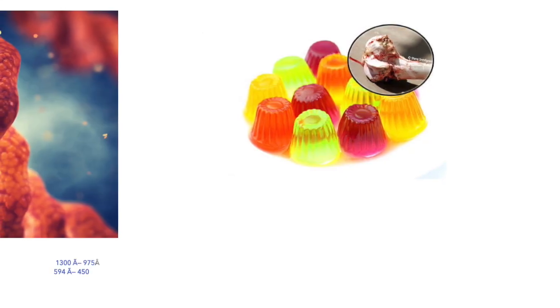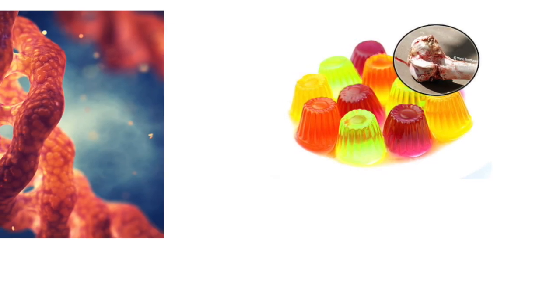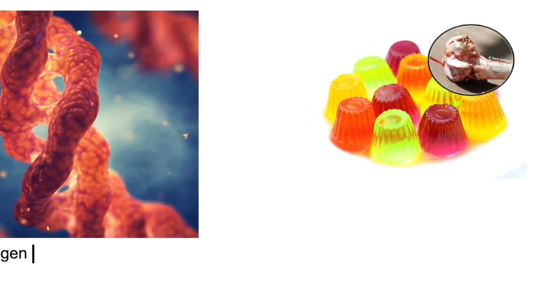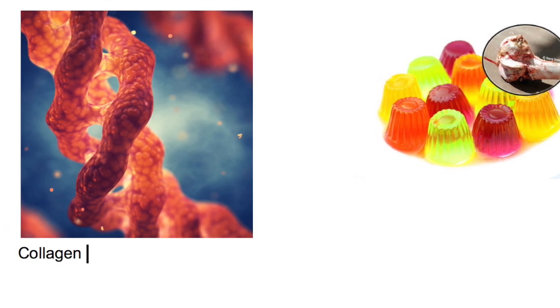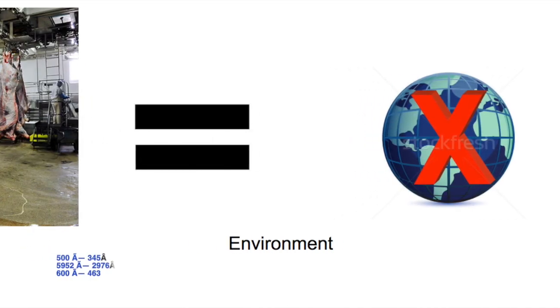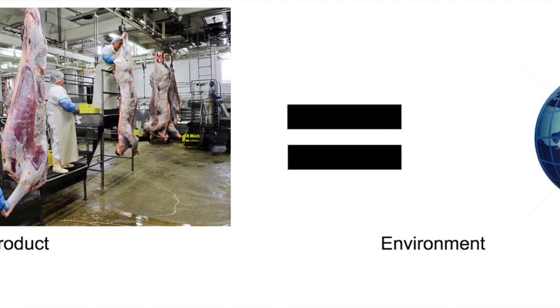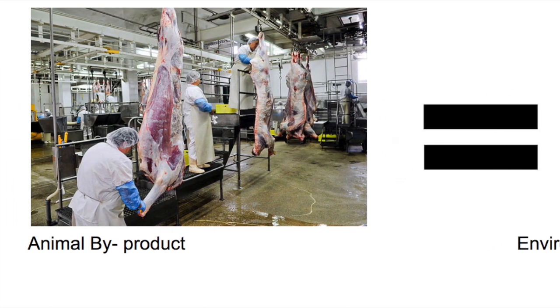The main ingredient to Jell-O is gelatin. Gelatin is made from animal collagen. Collagen is a protein made up of tissues, tendons, ligaments, and bones from animals. The production of gelatin is very unsustainable because of the animal byproducts and because it is so wasteful.